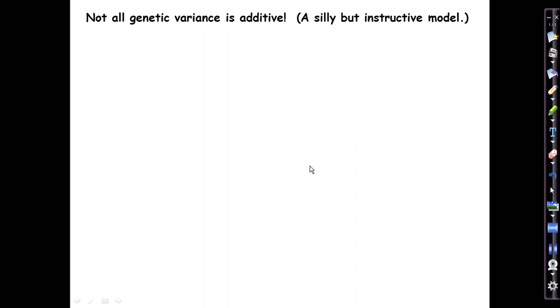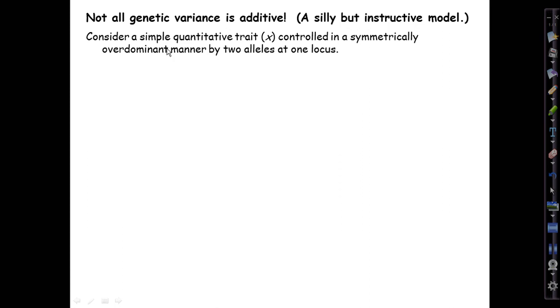Continuing the quantitative traits lecture, it's time to confront the fact that not all genetic variance is additive—which is to say, not all of it contributes to the resemblance of parents and offspring. This is a silly made-up model but easy to understand and quite instructive.